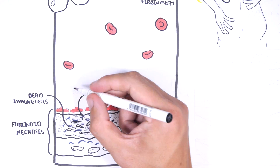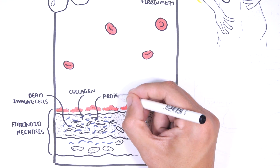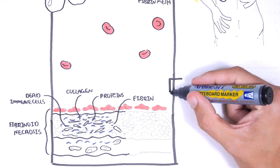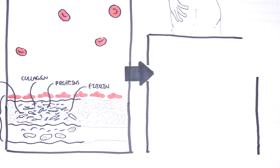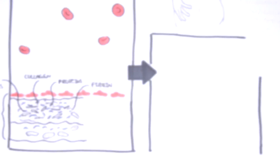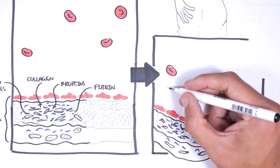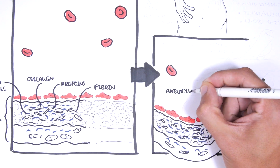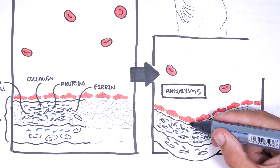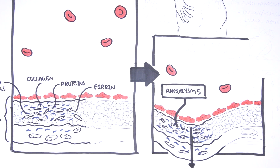Fibrinoid necrosis includes dead cells, dead immune cells, collagen, proteins, and fibrin. The vessel is now not as strong, and aneurysms can occur. Aneurysms are dilatations of up to 1 cm in size along the involved arteries, and this is characteristic of polyarteritis nodosa.